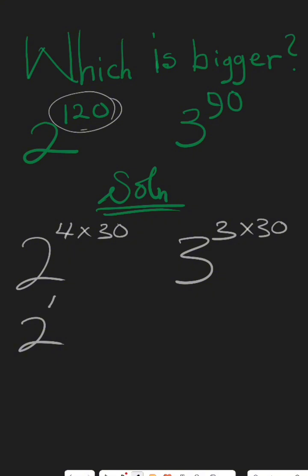This becomes 2 raised to the power of 4 in brackets, raised to the power of 30. And this is 3 raised to the power of 3 in bracket or parenthesis, raised to the power of 30.